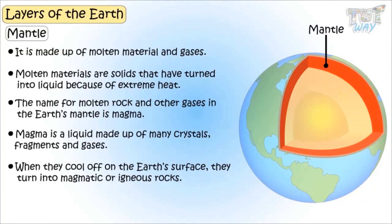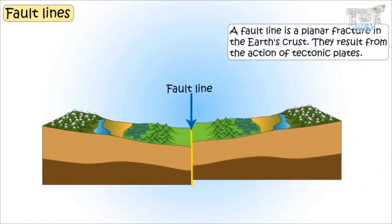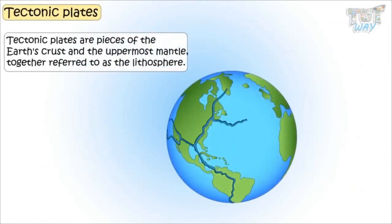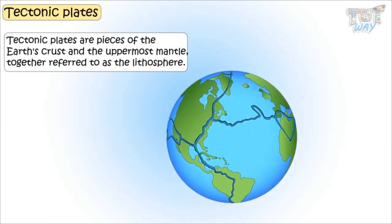Now let's learn what are fault lines. A fault is a planar fracture in the earth's crust. They result from the action of tectonic plates. Tectonic plates are pieces of the earth's crust and the uppermost mantle, together referred to as the lithosphere.